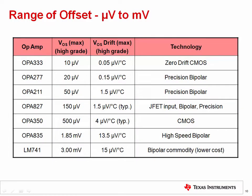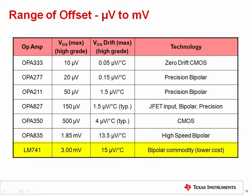This chart shows a range of offset voltages, from microvolts to millivolts, for different types of TI amplifiers. The first amplifier, the OPA333, includes a zero-drift topology which uses an internal digital calibration circuit to minimize offset and offset drift. Some precision bipolar amplifiers use laser trimming to minimize offset. Often you must trade off bandwidth or other characteristics for low offset. For example, the OPA835 is optimized for speed, not for offset. Also, commodity or low-cost amplifiers are usually not optimized for low offset or low offset drift.